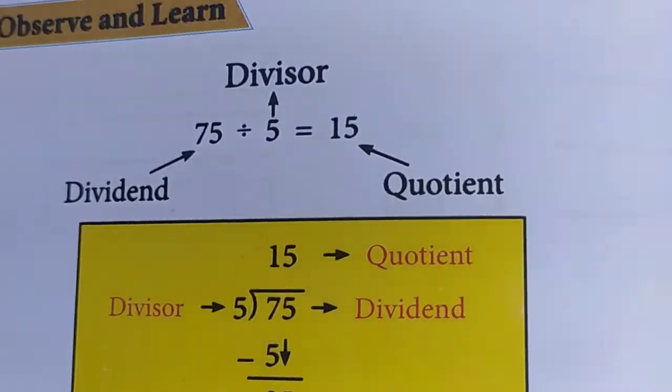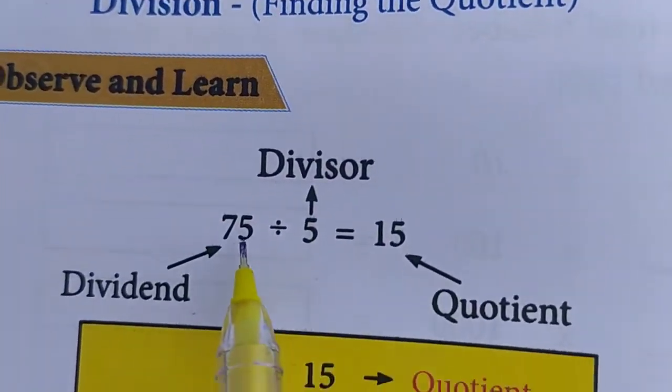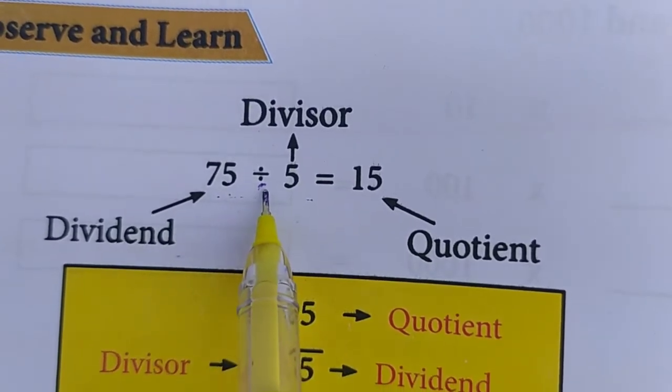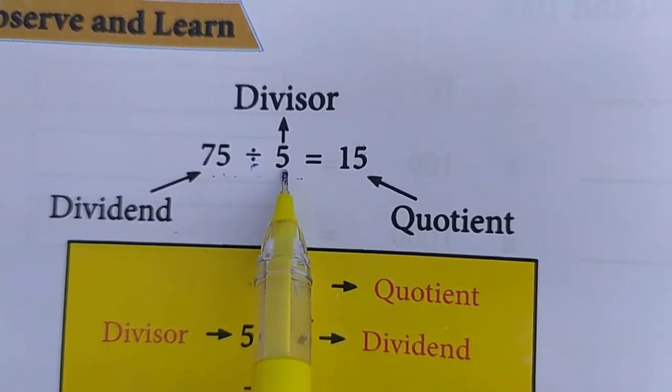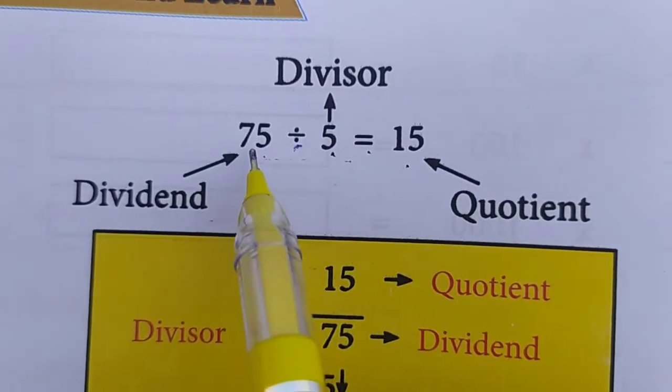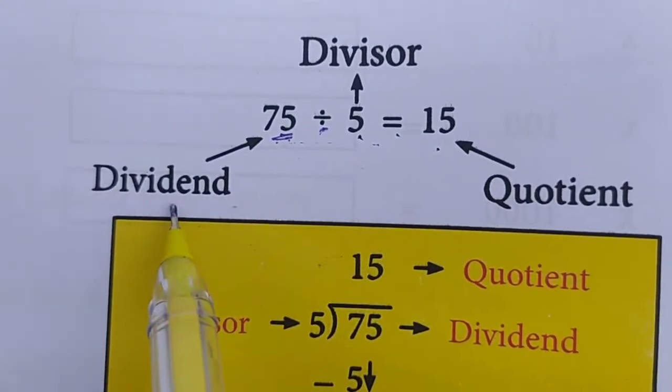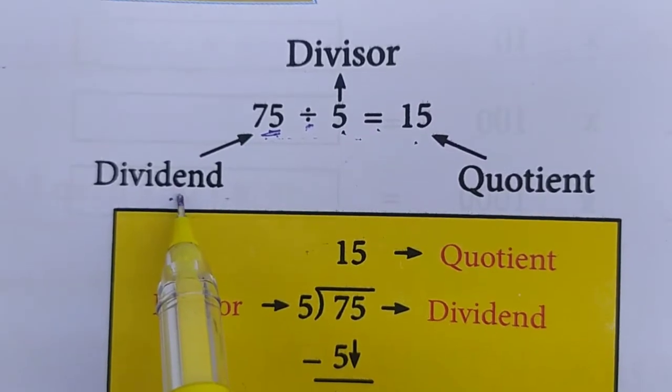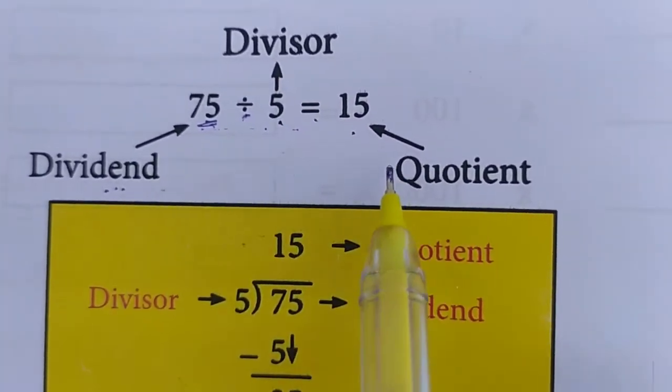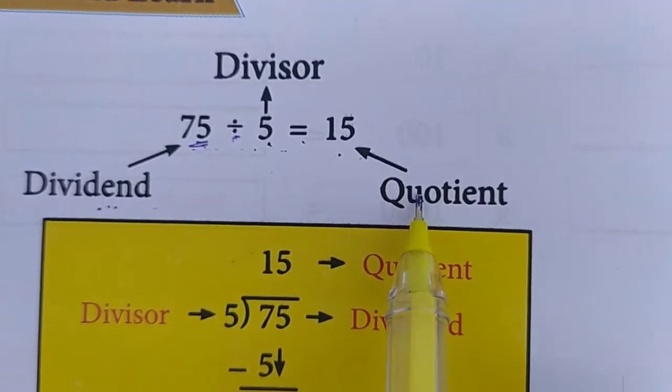Once we will revise them. See, in this, this is the division symbol. 75 divided by 5 is equal to answer you will get 15. 75 is called dividend, 5 is called as divisor, and answer 15 is the quotient, children.